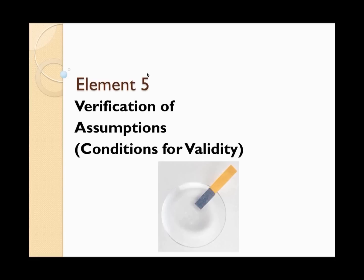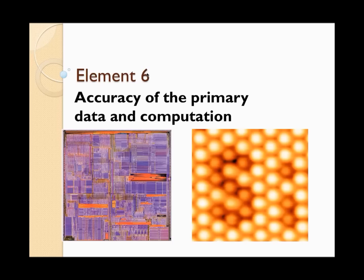Element five is verification of assumptions. To non-statisticians, the very word 'assumption' can be perilous and confusing — in a dictionary, an assumption is something accepted as true without proof. But when statisticians say assumptions, we mean that a statistical procedure has conditions for validity, and we recognize these conditions, such as normality and independence, should be verified. Testing assumptions is also more difficult than implementing methods, so when we define competence in statistical practice, the ability to test assumptions raises the standard considerably.